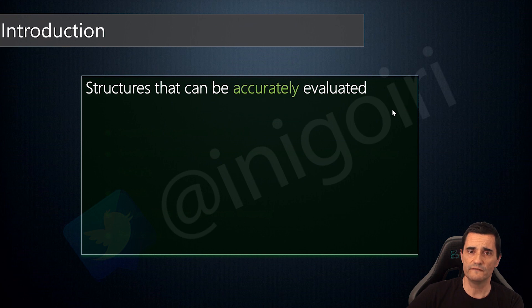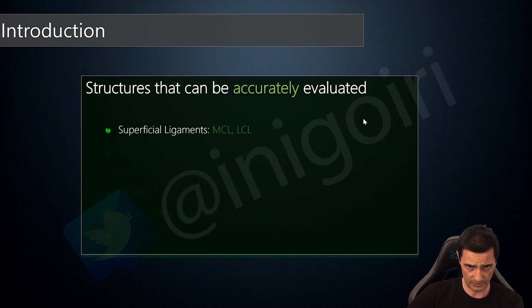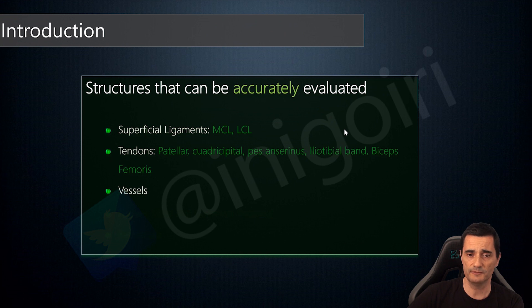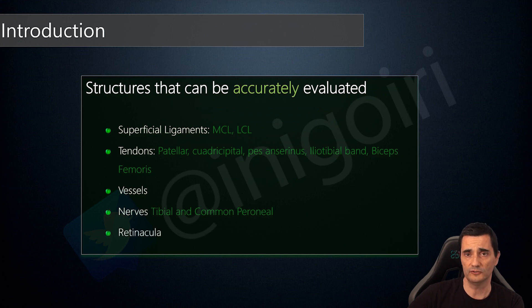There are several structures you can evaluate very accurately with ultrasound. For example, superficial ligaments — very common in daily practice — the medial collateral ligament, and not as frequent, the lateral collateral ligament. Tendons are very common: the patellar tendon, the quadricipital tendon, the pes anserinus, the iliotibial band, and biceps femoris. Vessels such as the tibial artery and veins, nerves like the tibial nerve and the common peroneal nerve, and the medial and lateral retinacula.